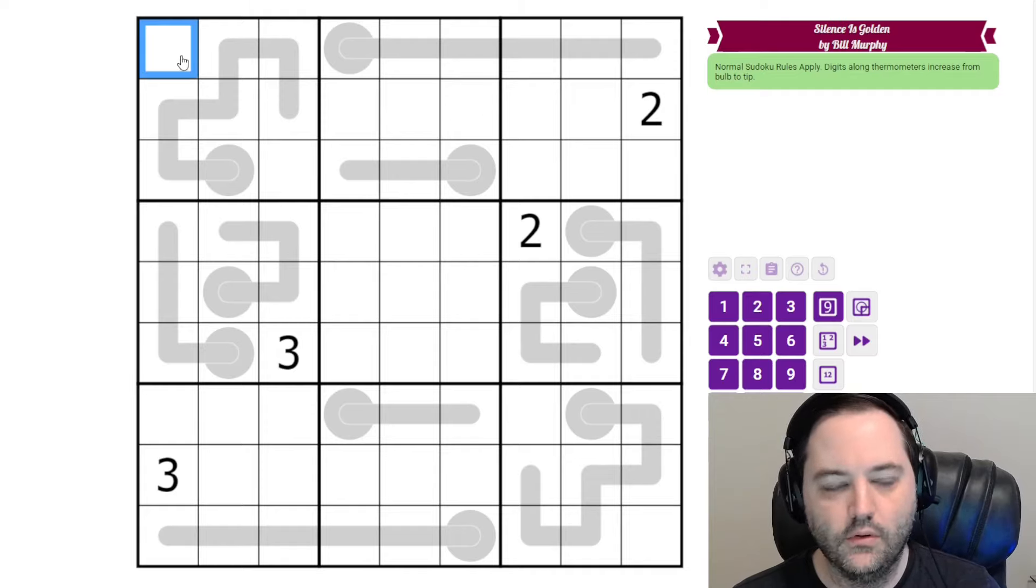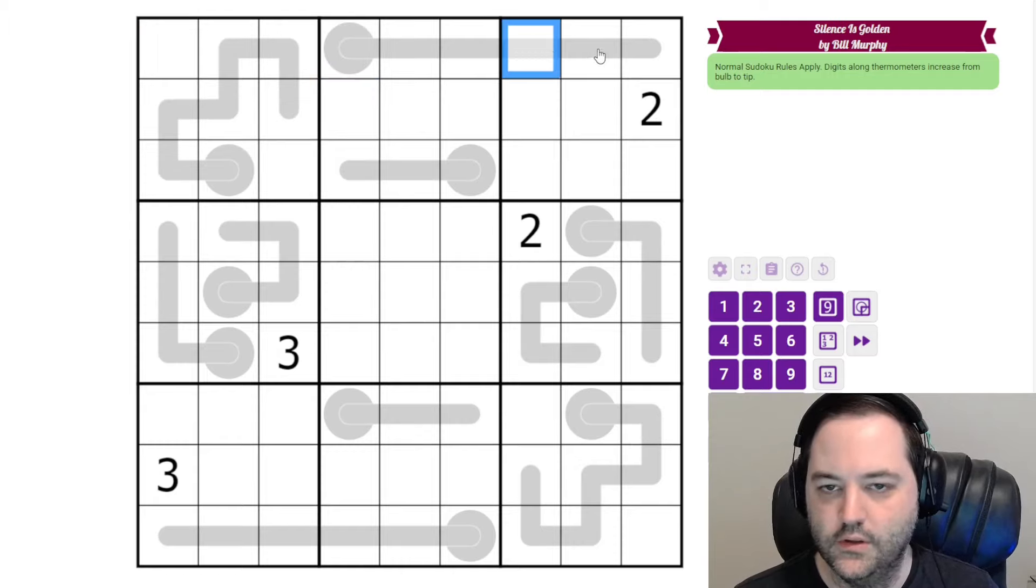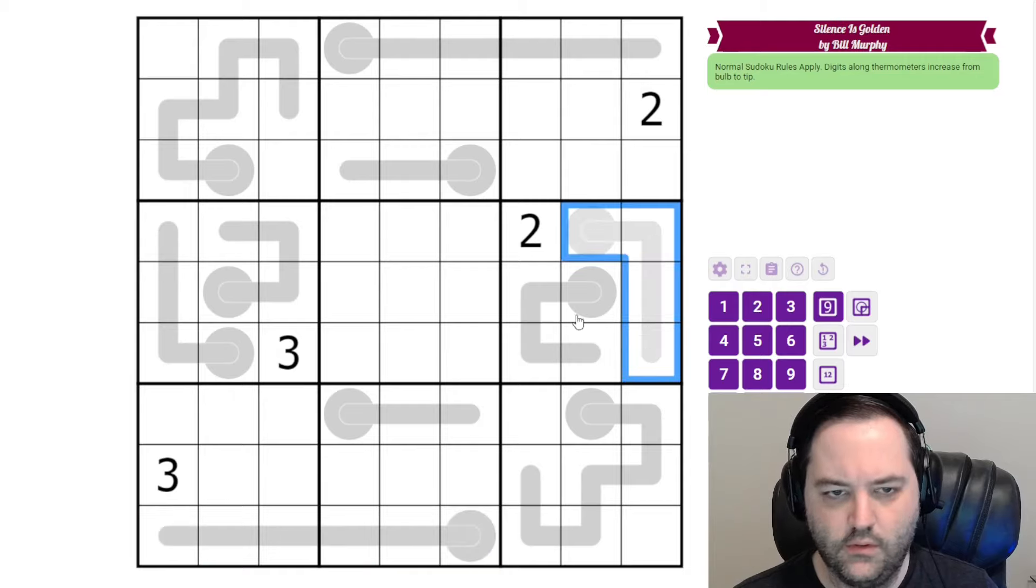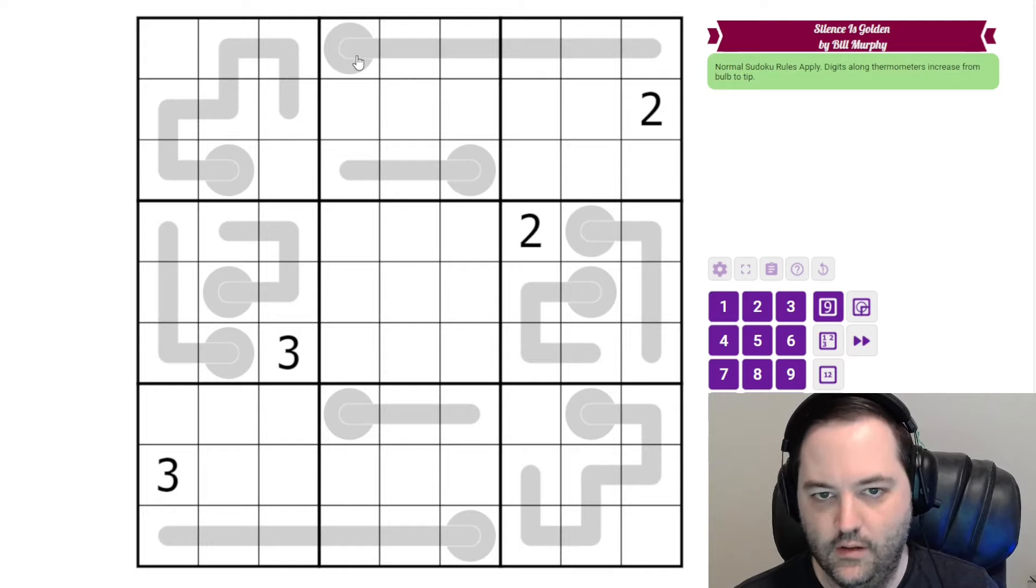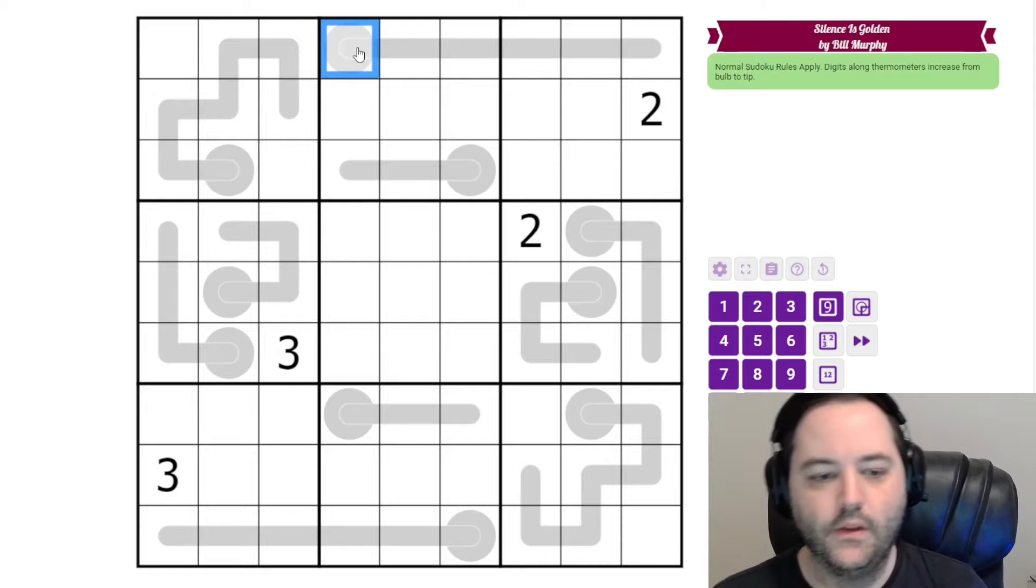This is a Thermo Sudoku, so we have normal Sudoku rules, one to nine in each row, column, and three by three box. Additionally, we have thermometers, and along the thermometers, the digits must increase from the bulb to the tip. And I believe all of these thermometers are contained in the same row or box. Even if they weren't, they do have to strictly increase. It can't stay the same. So if this thermo went like this, you couldn't have four here. But we don't have to worry about that in this puzzle.